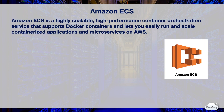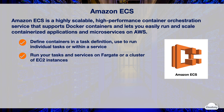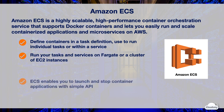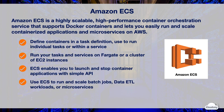Amazon ECS is a highly scalable, high-performance managed container orchestration service that supports Docker containers, and lets you easily run and scale containerized applications and microservices on AWS. You define containers in a task definition, which you use to run tasks individually or within a service. The task definition is a blueprint for your container application — it includes which containers to use, what ports to open, and which data volumes to use. You can run tasks on a serverless infrastructure managed by Fargate or on a cluster of EC2 instances. ECS also enables you to run and scale batch jobs, ETL workloads, or microservices applications.